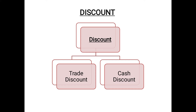Trade discount can be given both at the time of credit or cash purchases or sales. But cash discount is given only at the time of cash transactions. Trade discount is calculated but not exclusively shown in the books by name — we deduct the amount and show the net figure. But cash discount is both calculated and also shown specifically in the books of accounts.